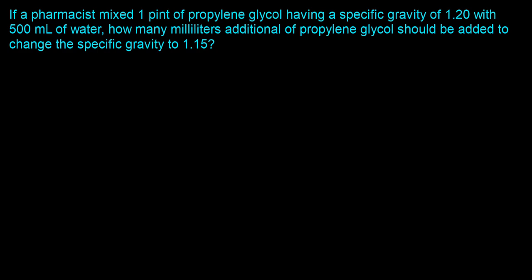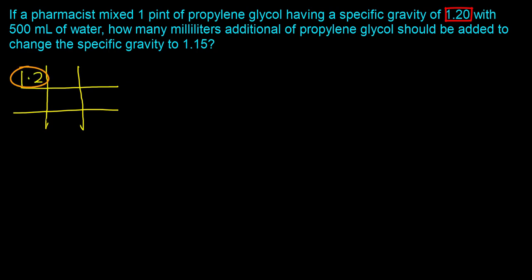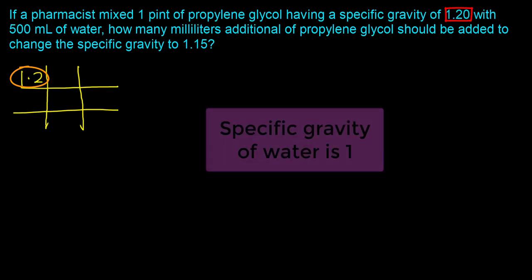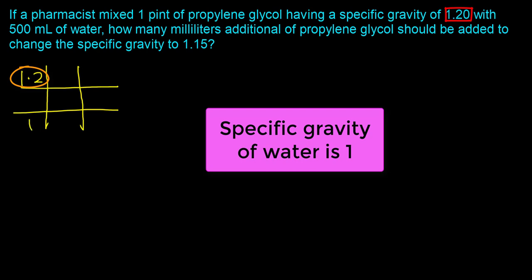Since we are mixing two components to get our desired mixture, we can solve this rather expeditiously using the allegation method. The way the allegation method works is you first set up your grid — two vertical lines and two horizontal lines. We put the highest specific gravity, 1.2, in the top left; the lowest specific gravity, which is water at 1, in the bottom left; and our desired specific gravity of 1.15 in the middle.